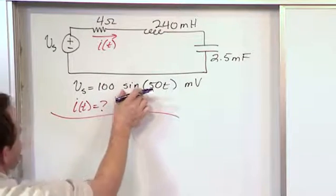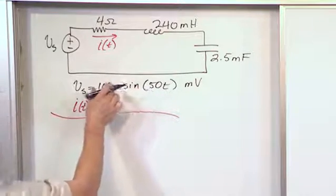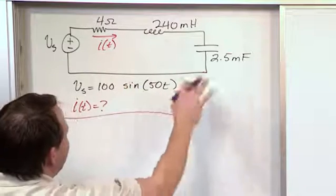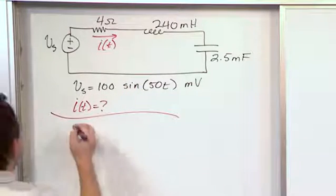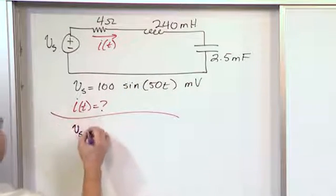So first of all you need to do two things: you need to convert this to a cosine, and also this is written in terms of millivolts. We don't want to deal in millivolts, we always want to deal in volts. So let's rewrite Vs as follows.